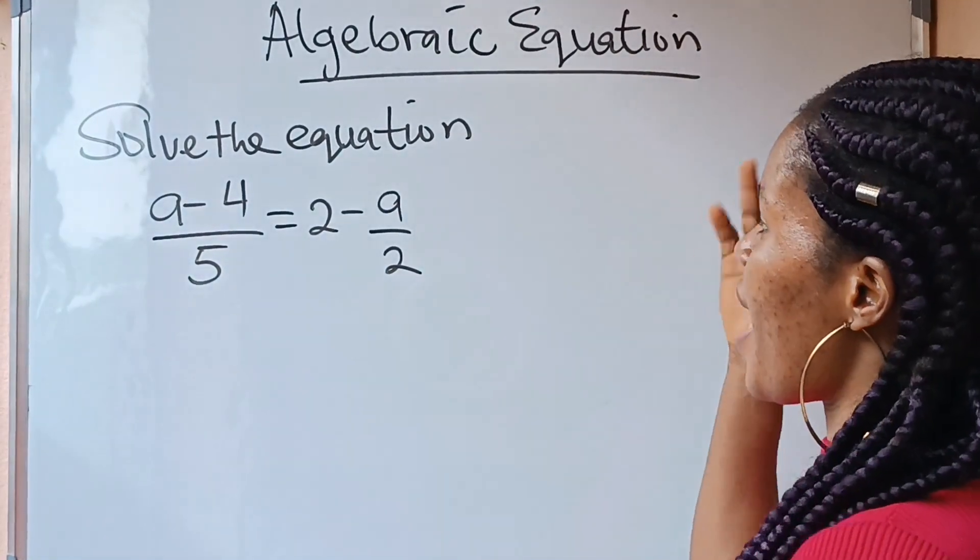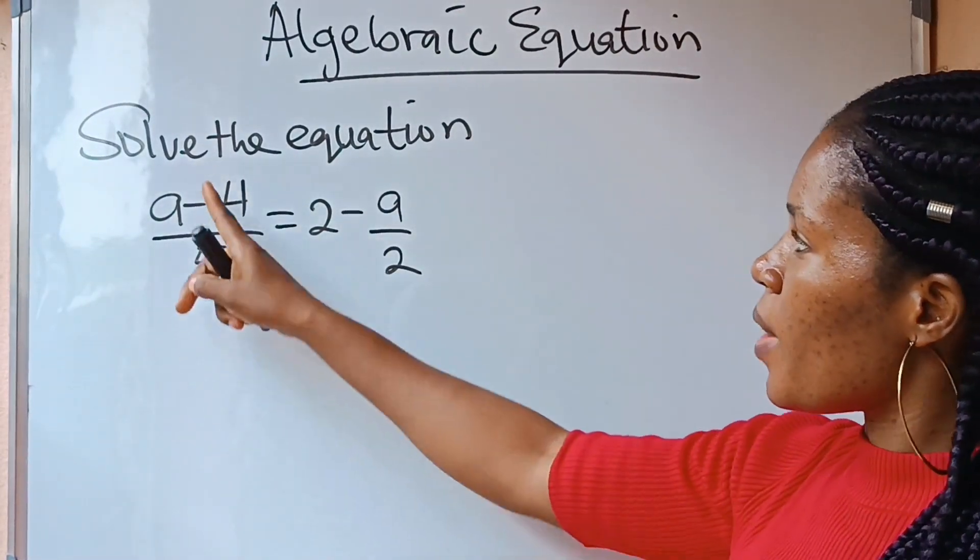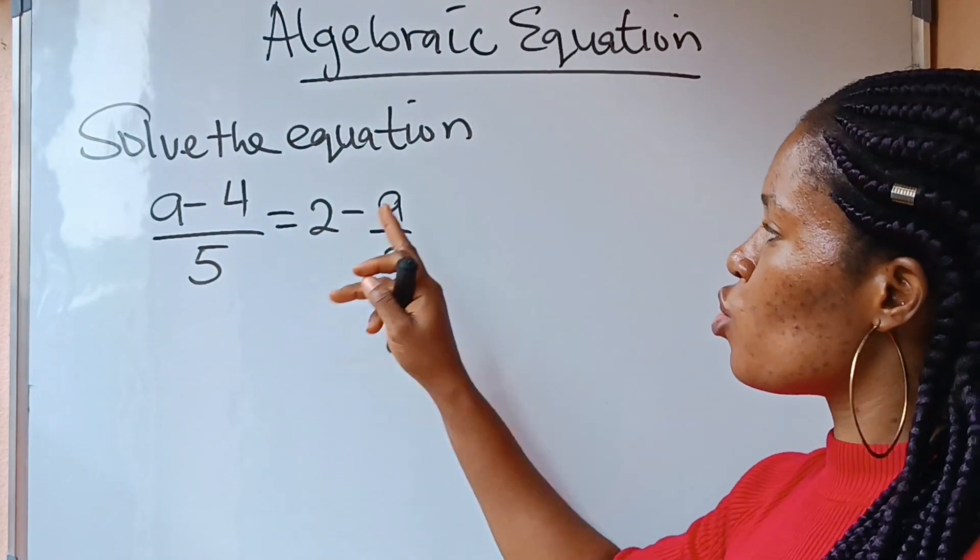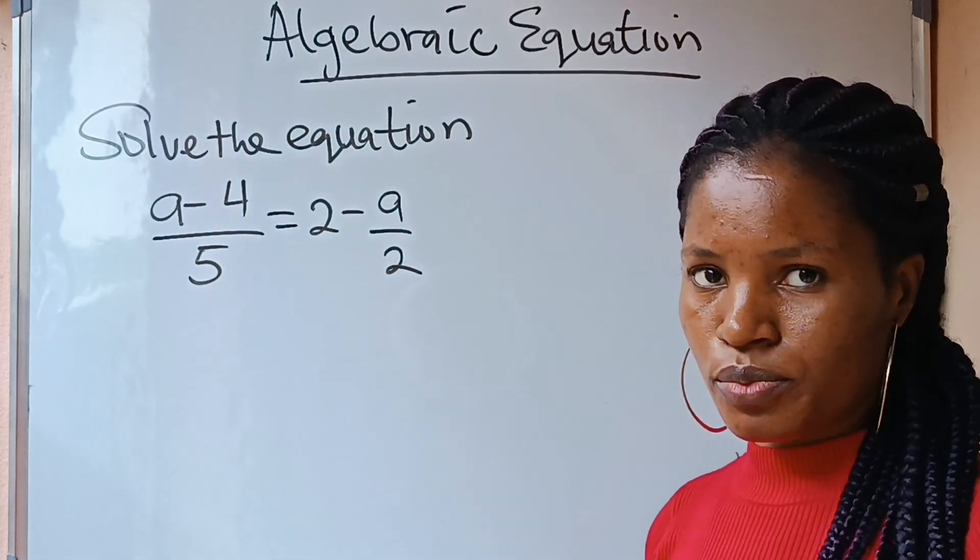Hello, pals. We are asked to solve this equation. A minus 4 all over 5 is equal to 2 minus A over 2.